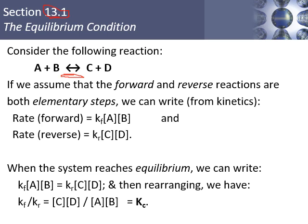Instead of having a single-headed arrow pointing to the right, we have a double-headed arrow pointing both ways. A plus B can go together to make C plus D, or the opposite can happen — this is referred to as an equilibrium. Almost all reactions, with maybe just a few exceptions, go in both directions. And unlike chapter 14, you actually can look at an equilibrium and write the equilibrium expression.